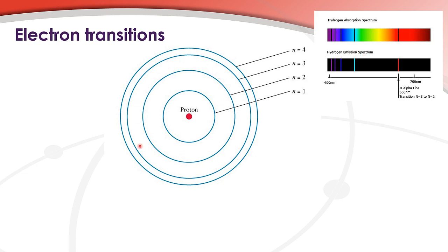Here we have the Bohr model of the atom, which has the protons and neutrons in the nucleus and the electrons in energy levels or shells around the nucleus. We give these energy levels numbers: n equals 1, which is closest to the nucleus; n equals 2, which is further away; n equals 3 and n equals 4.